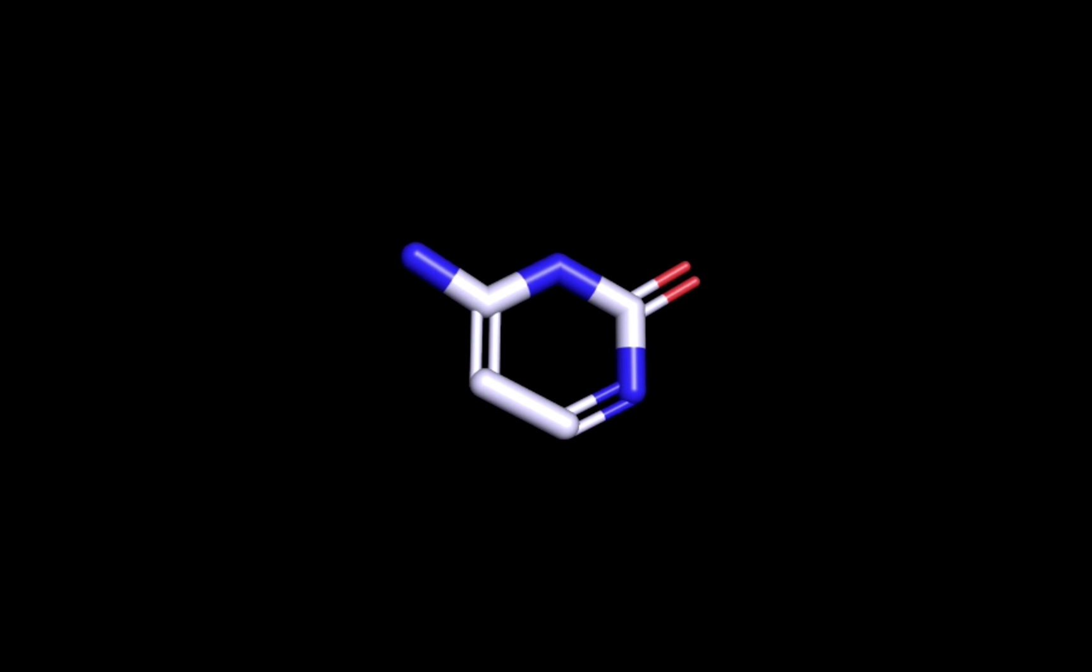Two of the nitrogenous bases are pyrimidines, and thymine is the other one. Thymine differs from cytosine because it contains 2 carbonyl groups, an extra CH3, and a different arrangement of the double bonds within and around the ring.